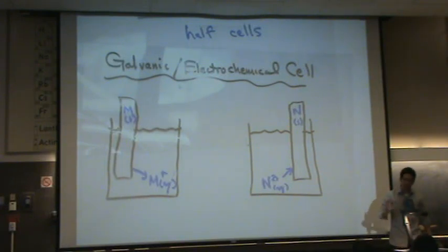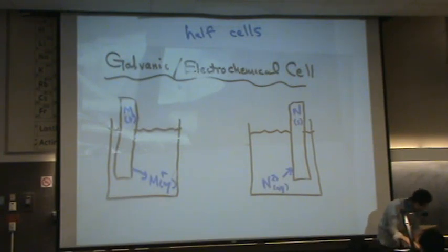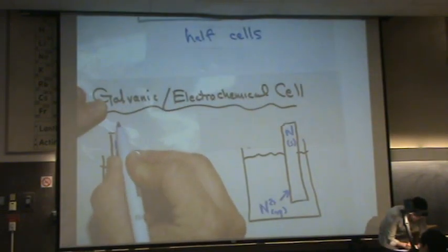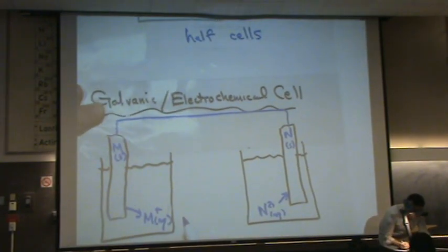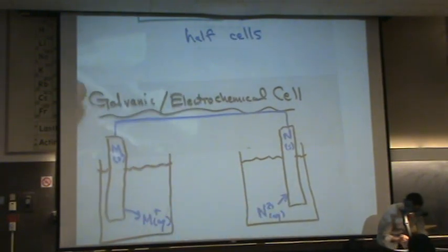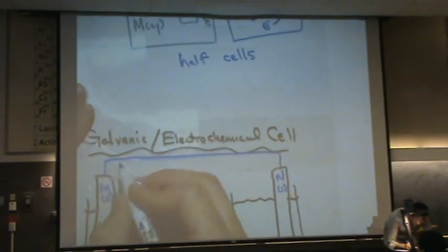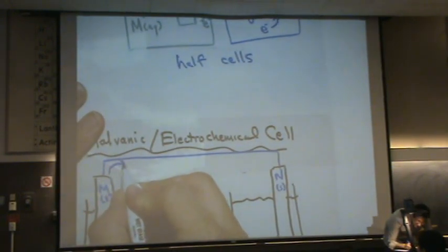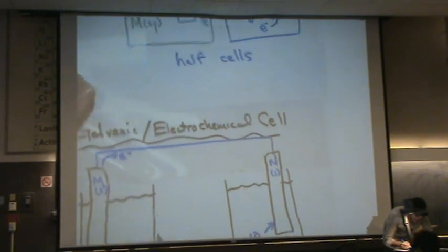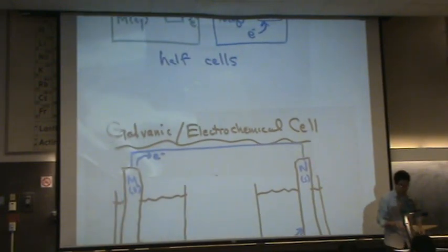So now we want to take care of those electrons. So what we're going to do is we're going to connect a little wire here between them. And remember that the M part is losing electrons. So we're going to have electrons flow into this wire, just like a little current.